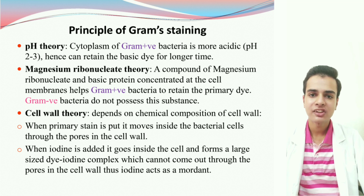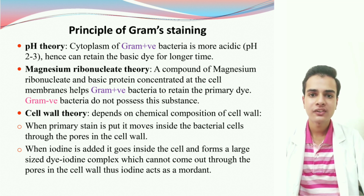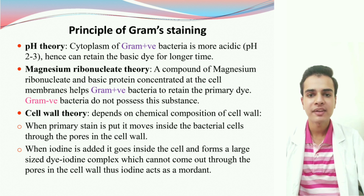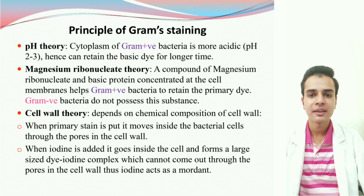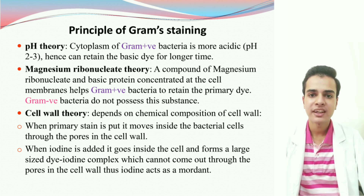The second theory is the Magnesium-ribonucleate theory. According to this theory, a compound of Magnesium-ribonucleate and basic protein is concentrated at the cell membranes of the Gram-positive bacteria and helps them in retaining the primary stain, while this is absent in the case of Gram-negative bacteria.